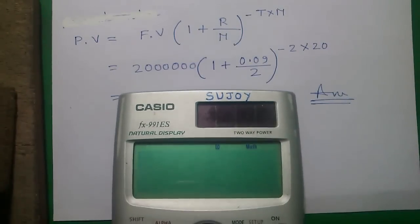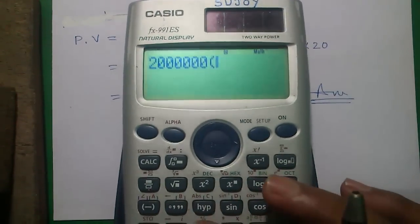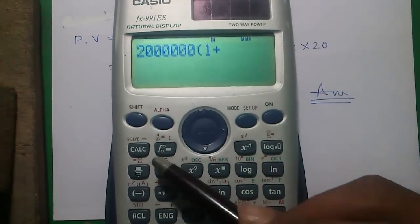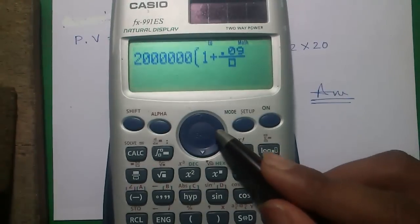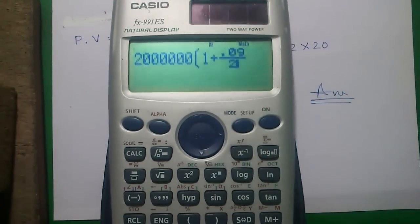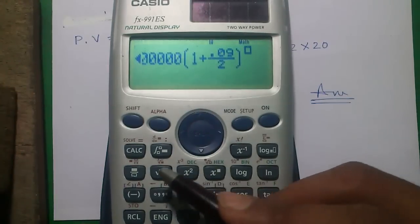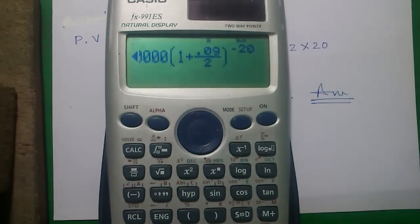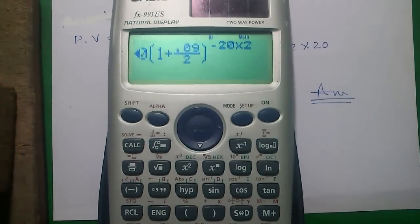To calculate it using your calculator, enter the amount: 20 lakhs into, press the left parenthesis, 1 plus, press the fraction button, 0.09 divided by 2, press the right parenthesis, press this button for power, press minus 20 into M, and press the equals to button.